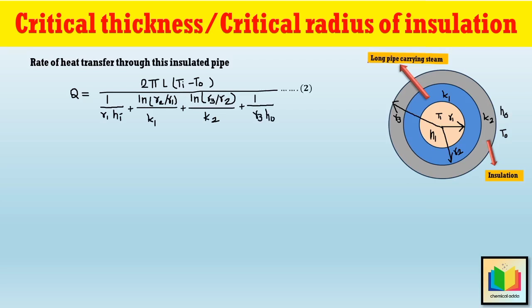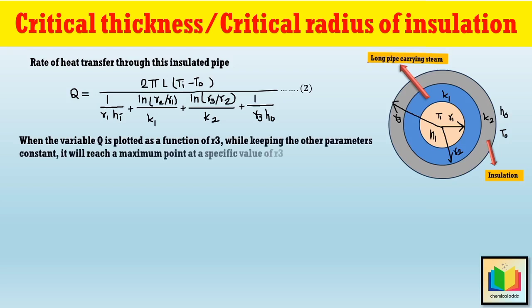Using this heat transfer equation, when Q is plotted as a function of r3 while keeping other parameters constant, it reaches a maximum at a specific value of r3. This value of r3 at which Q is maximum is called the critical radius of insulation. To calculate the critical thickness, we differentiate the equation with respect to r3, keeping other parameters constant, and equate to zero.